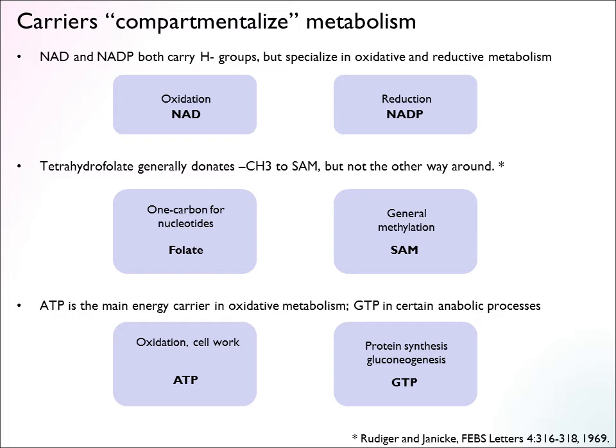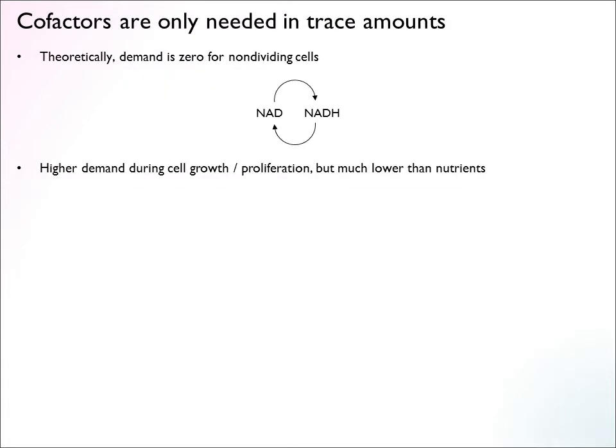Because cofactors are recycled in metabolic pathways with no net consumption or production, you would expect that cofactors are only needed in small amounts. Theoretically, in a non-dividing cell that just does its metabolic function, the demand for a cofactor is essentially zero. In proliferating cells there is a somewhat higher demand because you have to regenerate cofactor pools, but generally the requirements for cofactors is low.